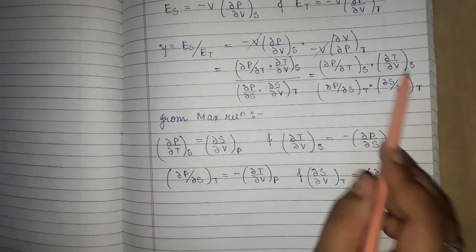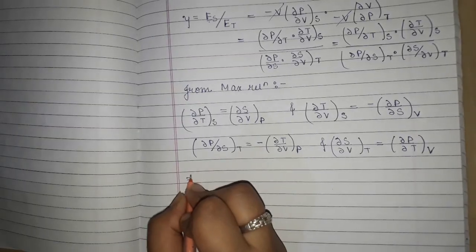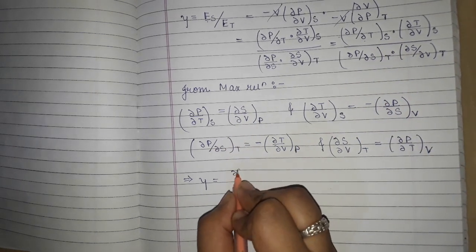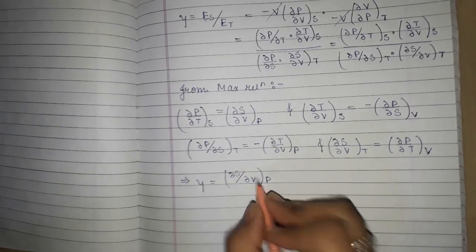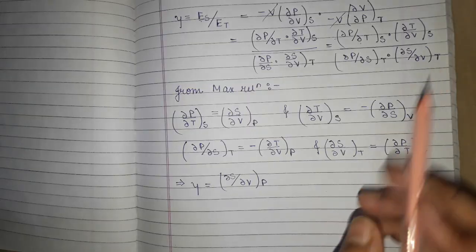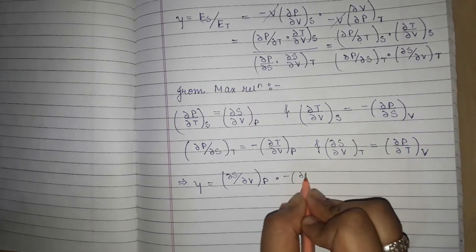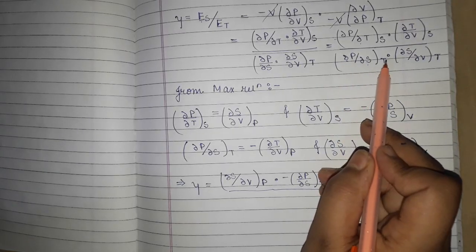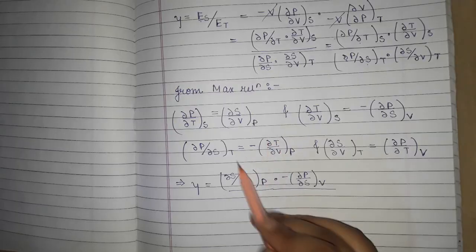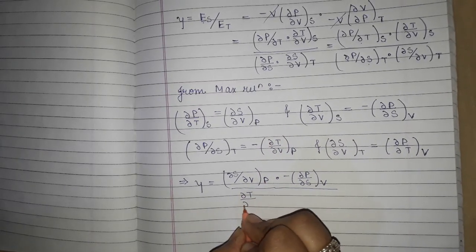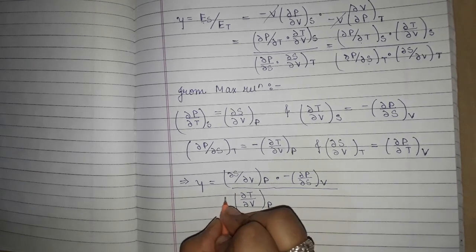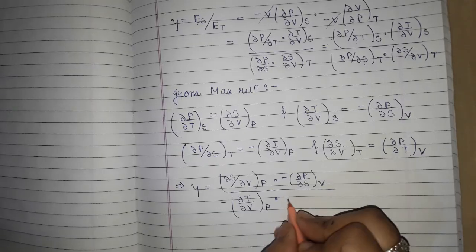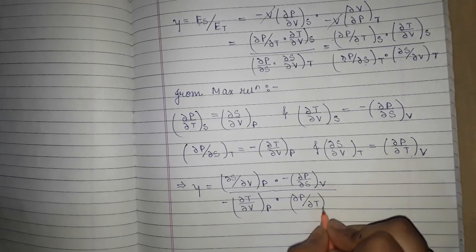Now we will put these values into our gamma equation. In place of dP/dV at constant S we substitute using Maxwell's relations. We replace dP/dT at constant S with dS/dV at constant P, replace dT/dV at constant S with minus dP/dS at constant V, replace dP/dS at constant T with its Maxwell equivalent, and replace dS/dV at constant T with dP/dT at constant V.